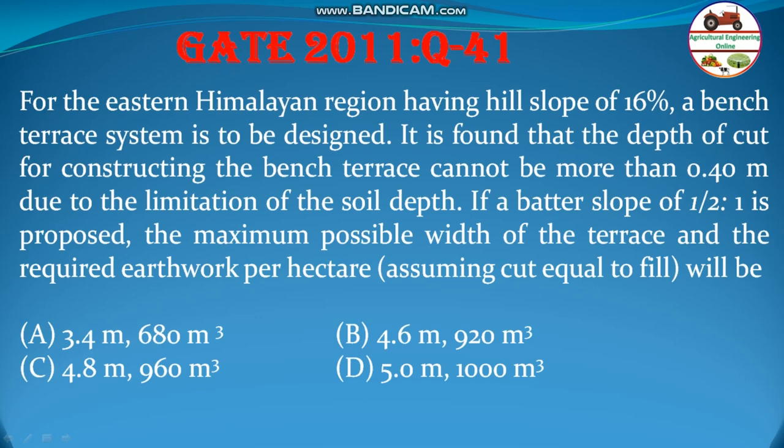Hello students, welcome to my channel. Let us solve a problem from 2011, question 41. For the Eastern Himalayan region having a hill slope of 16%, a bench terrace system is to be designed. It is found that the depth of cut for constructing the bench terrace cannot be more than 0.4 meter due to the limitation of the soil depth. If a batter slope of half to one is proposed, the maximum possible width of the terrace and the required earthwork per hectare will be calculated. Let us go to the solution part.